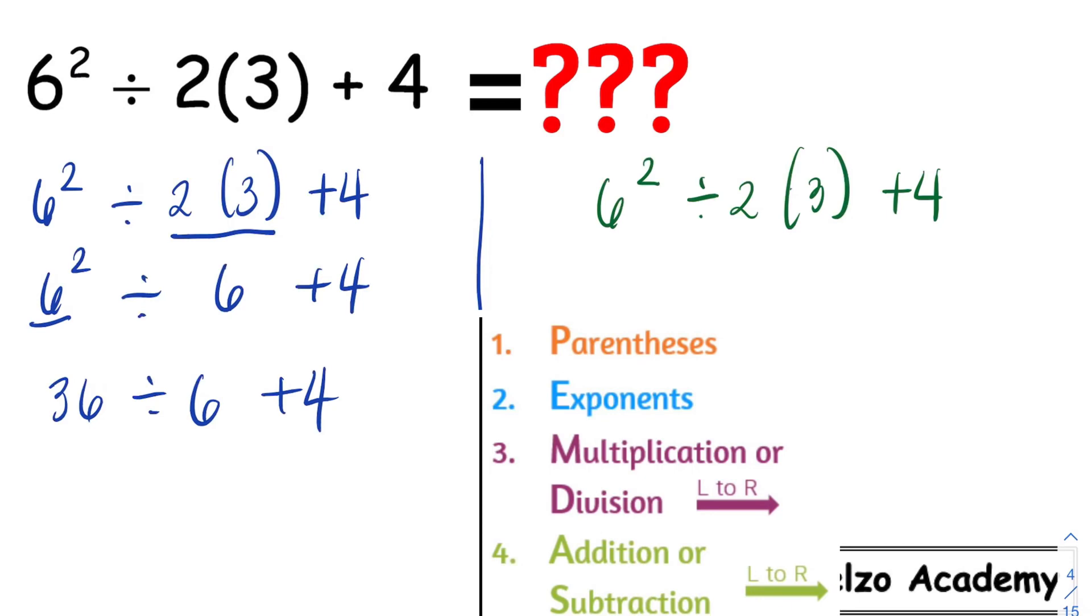Then, we need to simplify the division. 36 divided by 6 is 6 plus 4. So the final answer is 10.